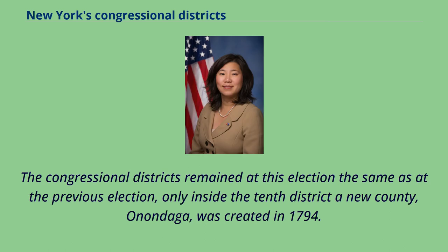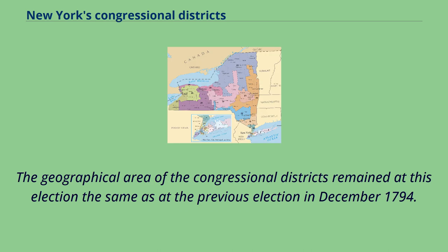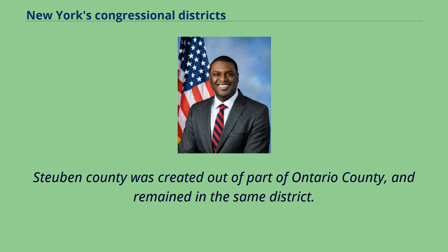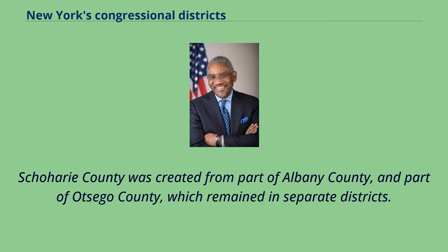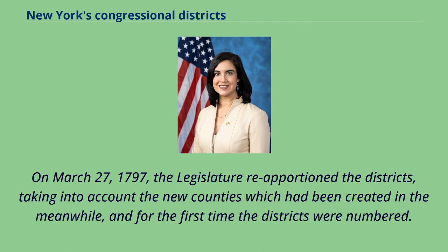The congressional districts remained the same as at the previous election, only inside the 10th district a new county, Onondaga, was created in 1794. The geographical area of the congressional districts remained the same as at the previous election in December 1794. Steuben County was created out of part of Ontario County and remained in the same district. Schoharie County was created from part of Albany County and part of Otsego County, which remained in separate districts. On March 27, 1797, the legislature reapportioned the districts, taking into account the new counties which had been created in the meanwhile, and for the first time the districts were numbered.